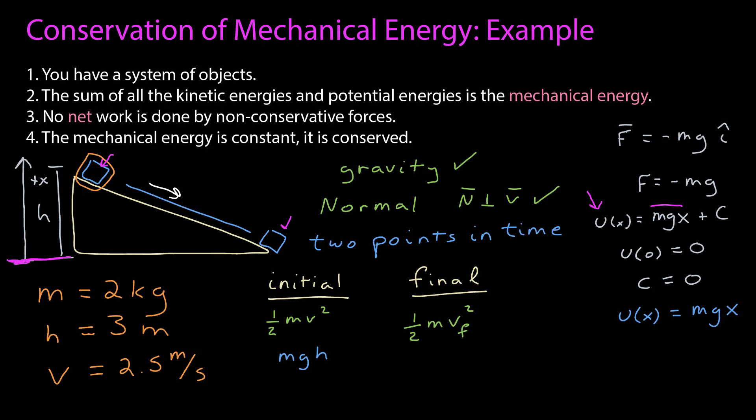Conservation of mechanical energy says that the total energy initial is equal to the total energy final. And I know everything except the final velocity, so I can go ahead and solve. It looks like I can divide out the masses, and the final velocity squared is equal to the initial velocity squared plus two times the acceleration due to gravity times h.